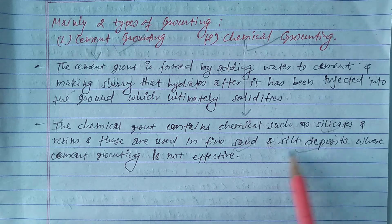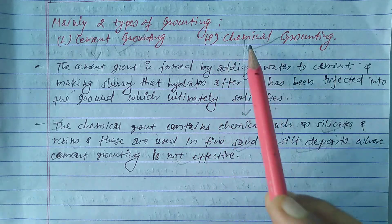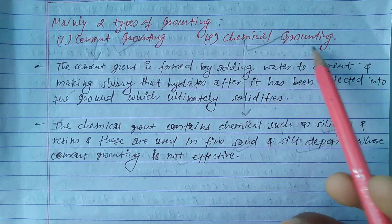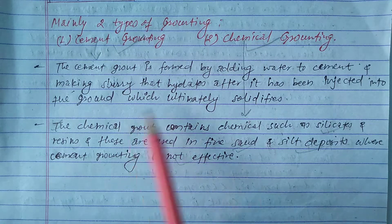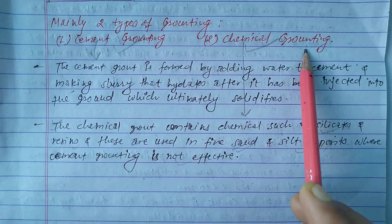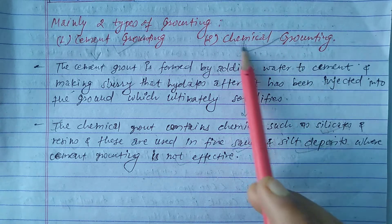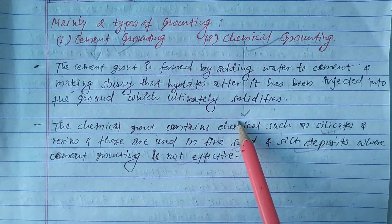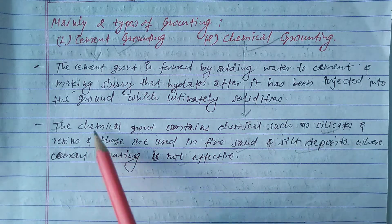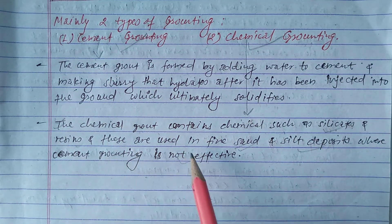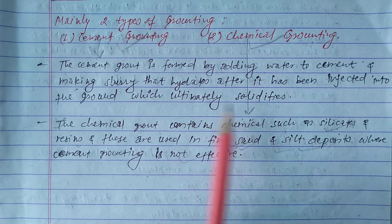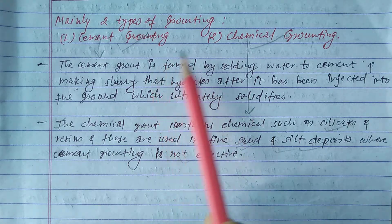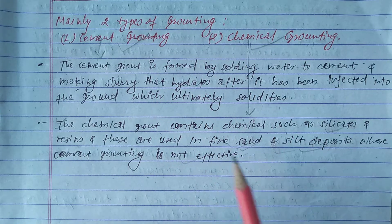Chemical grouting uses silicate-based chemicals and is used in fine sand and silt deposits where cement grouting is not effective — especially in fine silt deposits. These are the two types of grouting: cement grouting and chemical grouting.